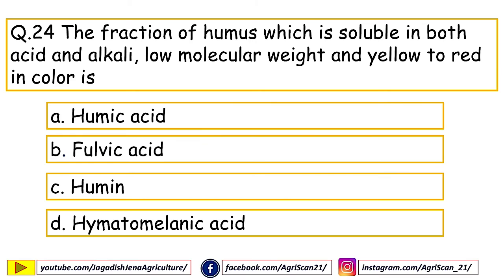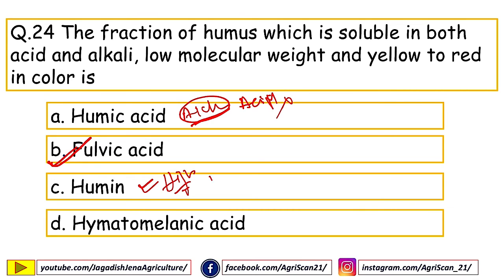Next question: the fraction of humus which is soluble in both acid and alkali, has low molecular weight and is yellow to red in color is known as — options are humic acid, fulvic acid, humin, hymatomelanic acid. The right answer is fulvic acid. Fulvic acid is a low molecular weight compound soluble in both acid and alkali. Humic acid is soluble only in alkali and insoluble in acid. Humin has very high molecular weight and is insoluble in both acid and alkali.